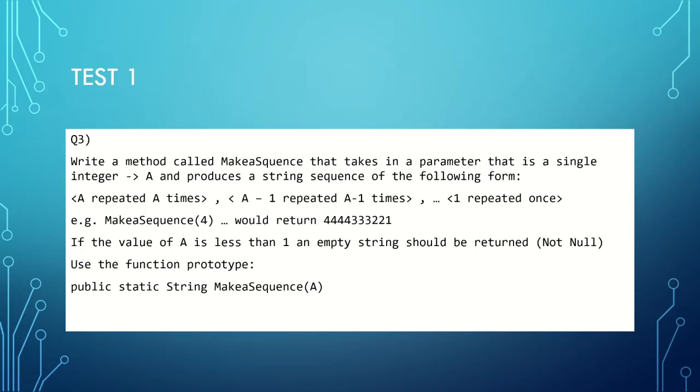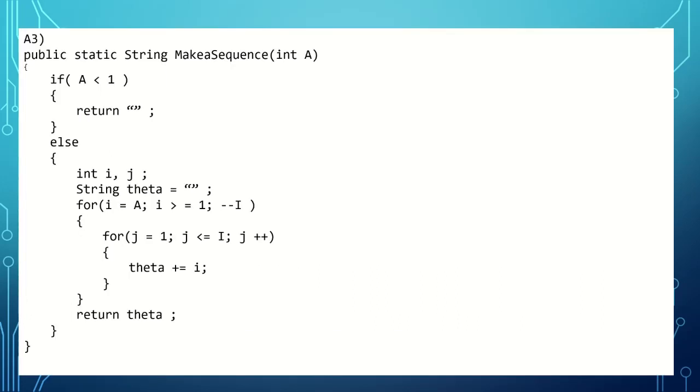You should have had a good swing at that question. Let's have a look at the solution. We've got public static String makeASequence int a. If a is less than one, we're going to be returning our empty string as per specified. For all other eventualities, we are creating two variables of type integer that we're going to be using for our for loops. We have our empty string theta that we're going to be adding to.